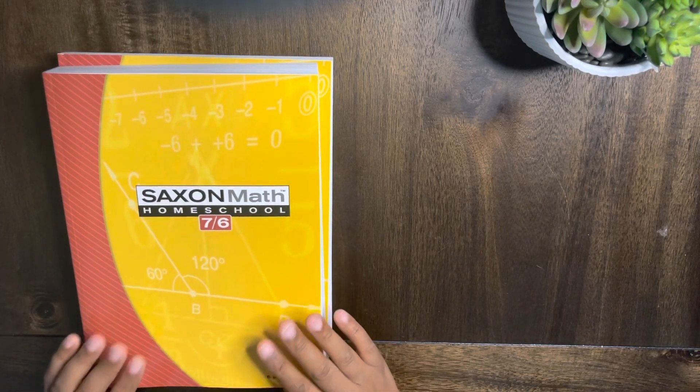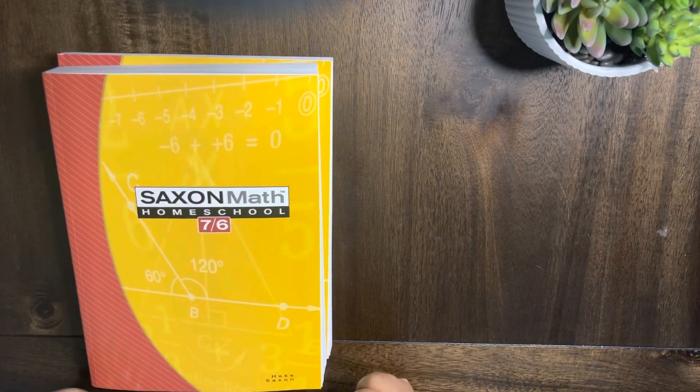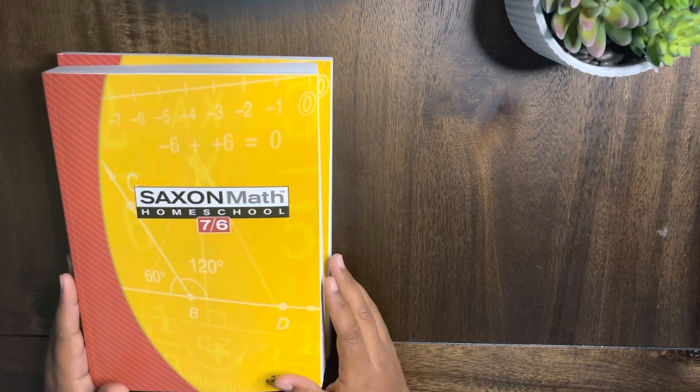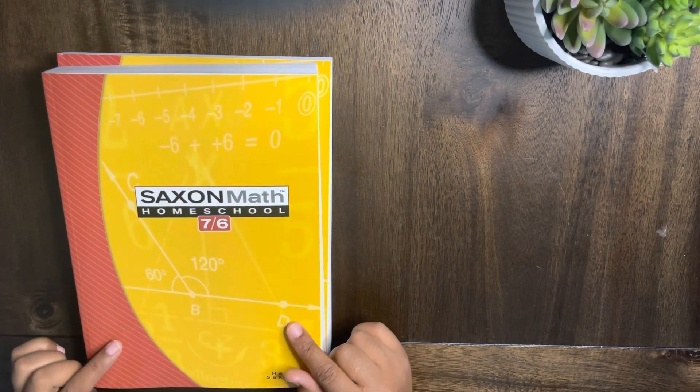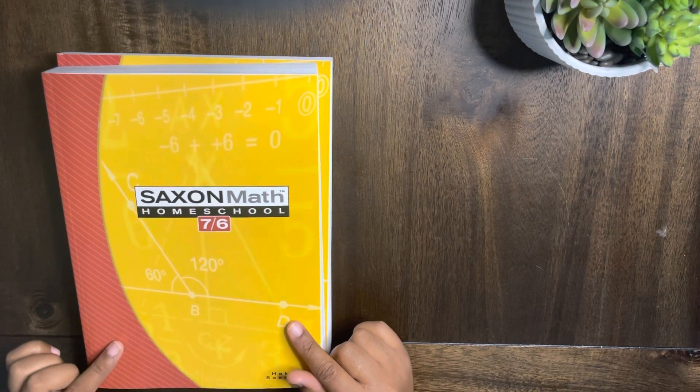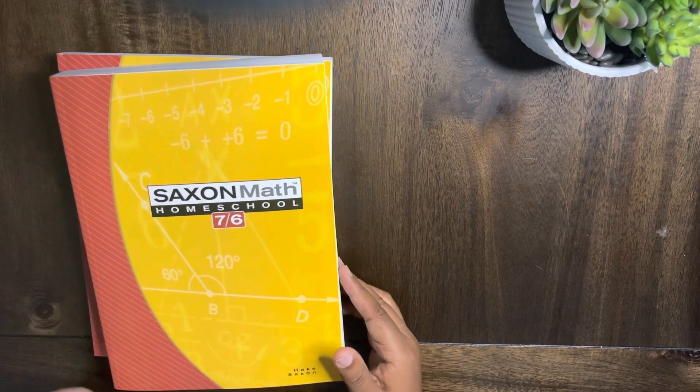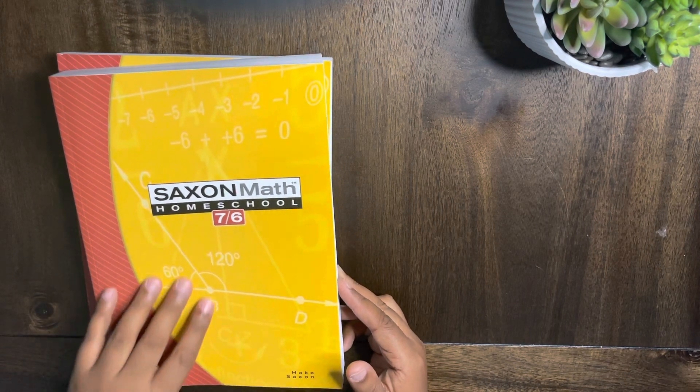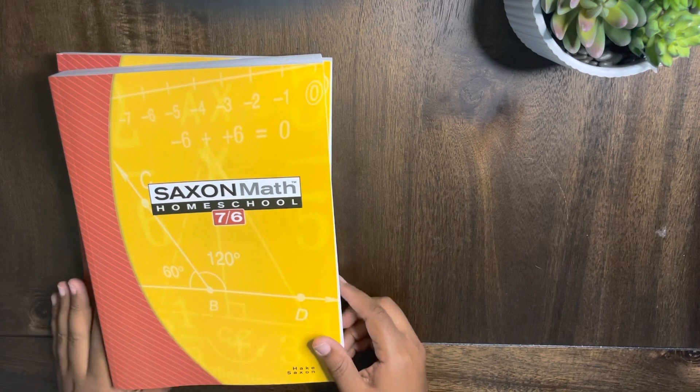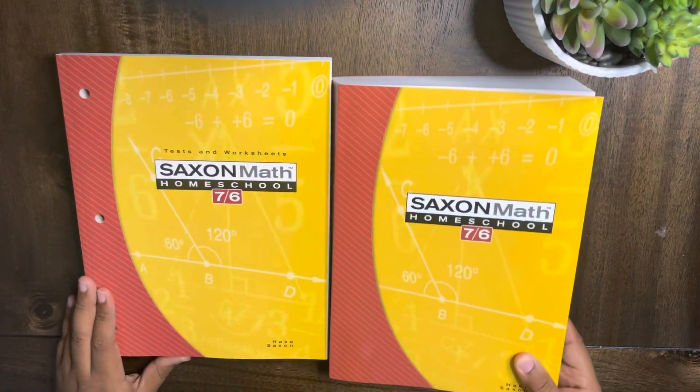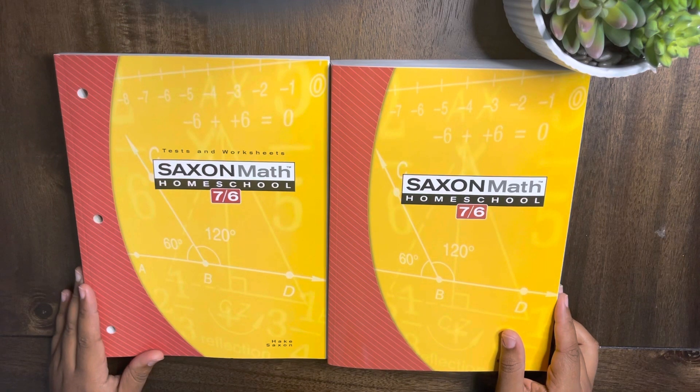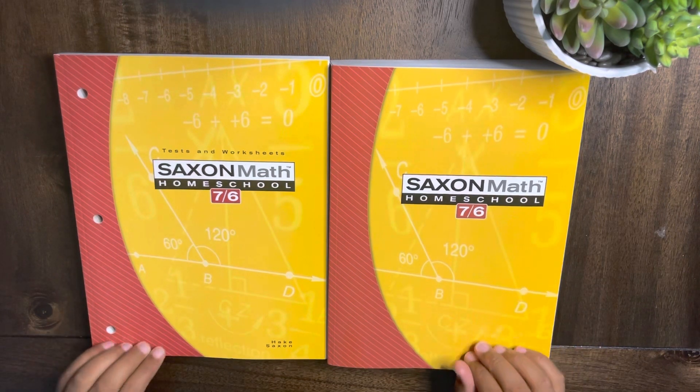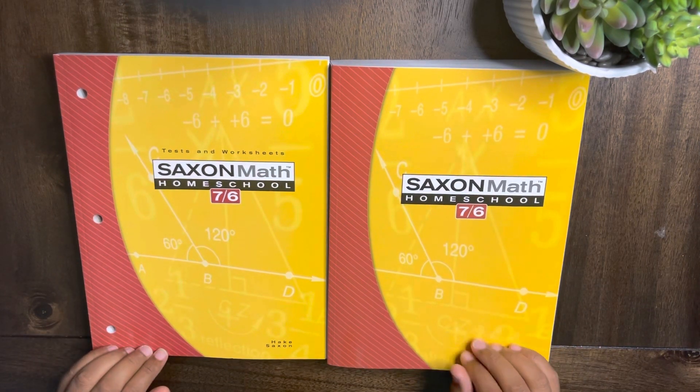Hey, welcome back to my channel His Love Her Home. Today we are going to take a look at Saxon Math Homeschool 7/6. This bundle, which I got from Rainbow Books, I will link that below. It cost me about $85, I believe that was the best price I found with Rainbow Books.